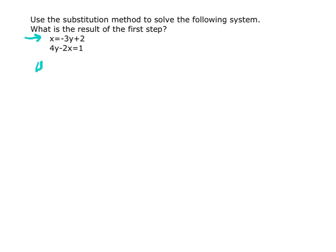So the second equation is 4y minus 2x equals 1. The x that we're going to substitute is this negative 3y plus 2, in for x.